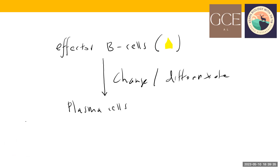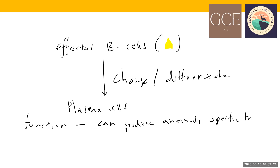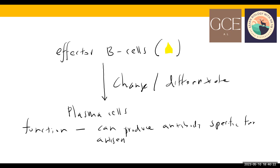What is the role of plasma cells? That's very important. Plasma cells can produce antibody specific for the antigen. You can see B-cells change to plasma cells, and plasma cells can now produce antibody — the proteins — specific to this antigen.